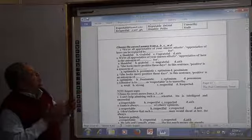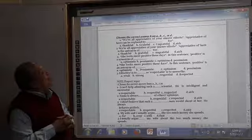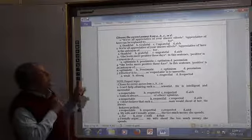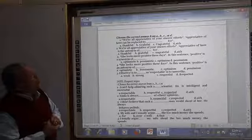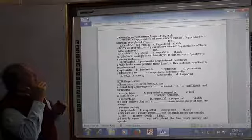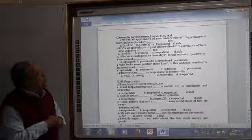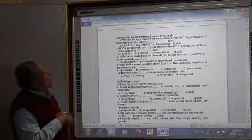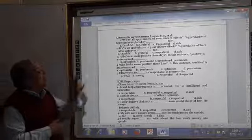We are all appreciative of your sincere effort. Appreciative here can be replaced by thankful or grateful. The answer is A and B, thankful and grateful. She looks more positive these days. In this sentence positive is a synonym of optimistic, but the antonym is pessimistic.